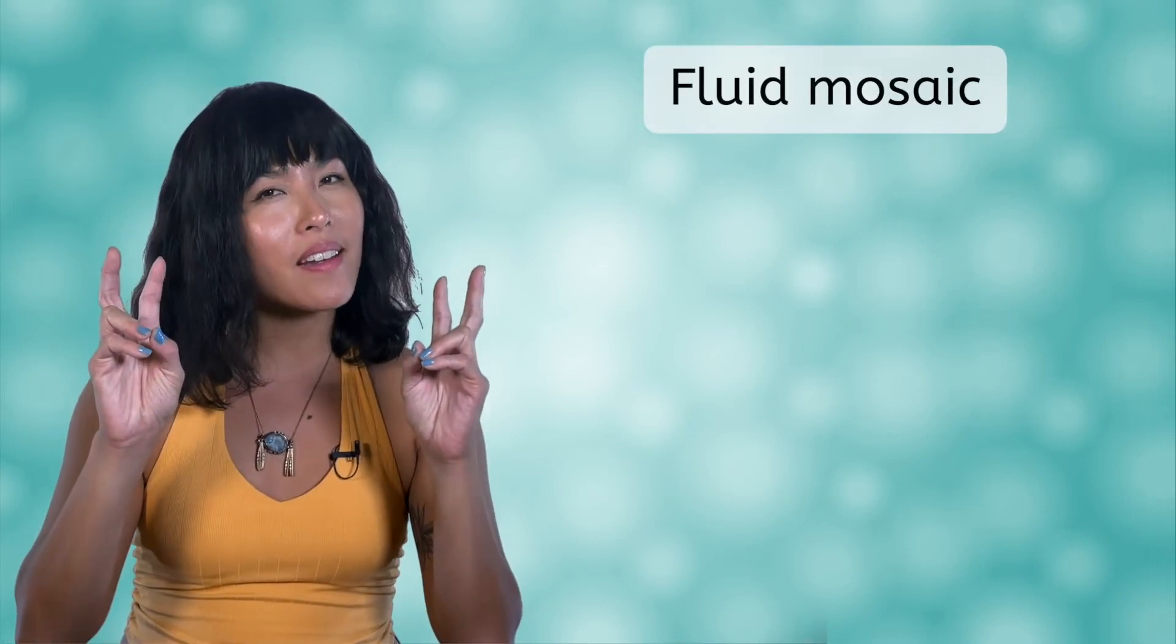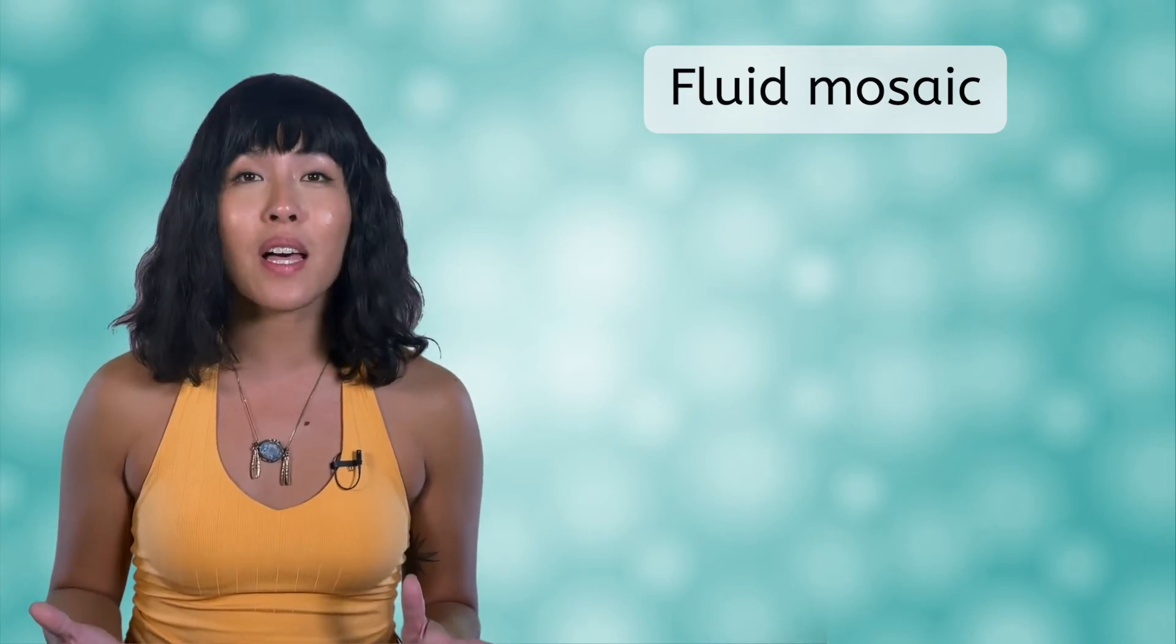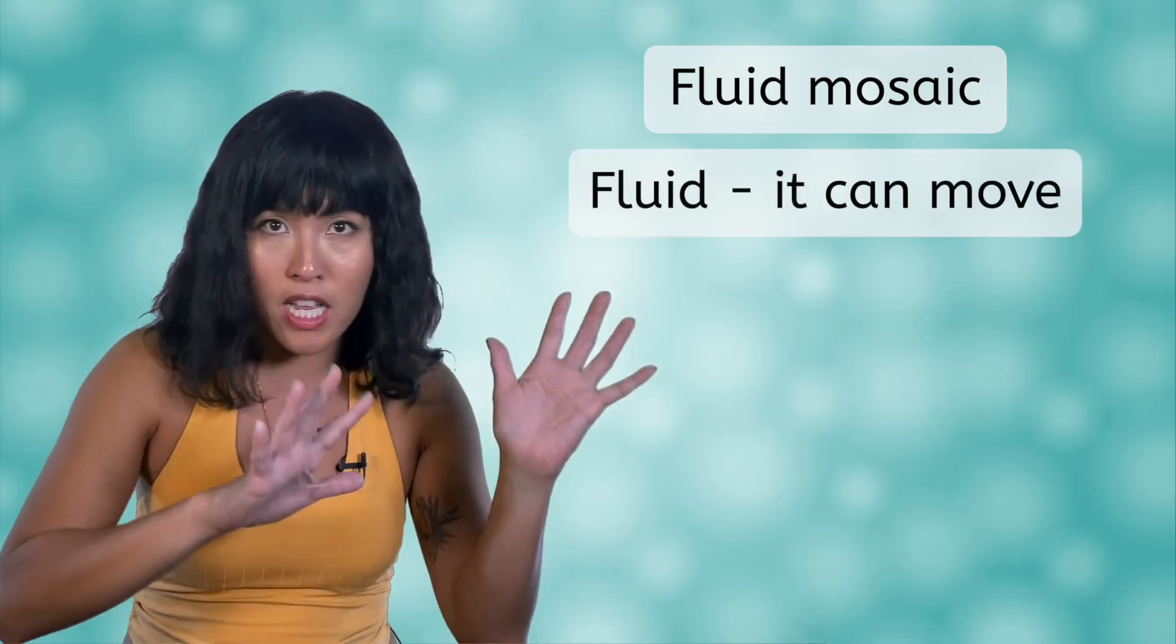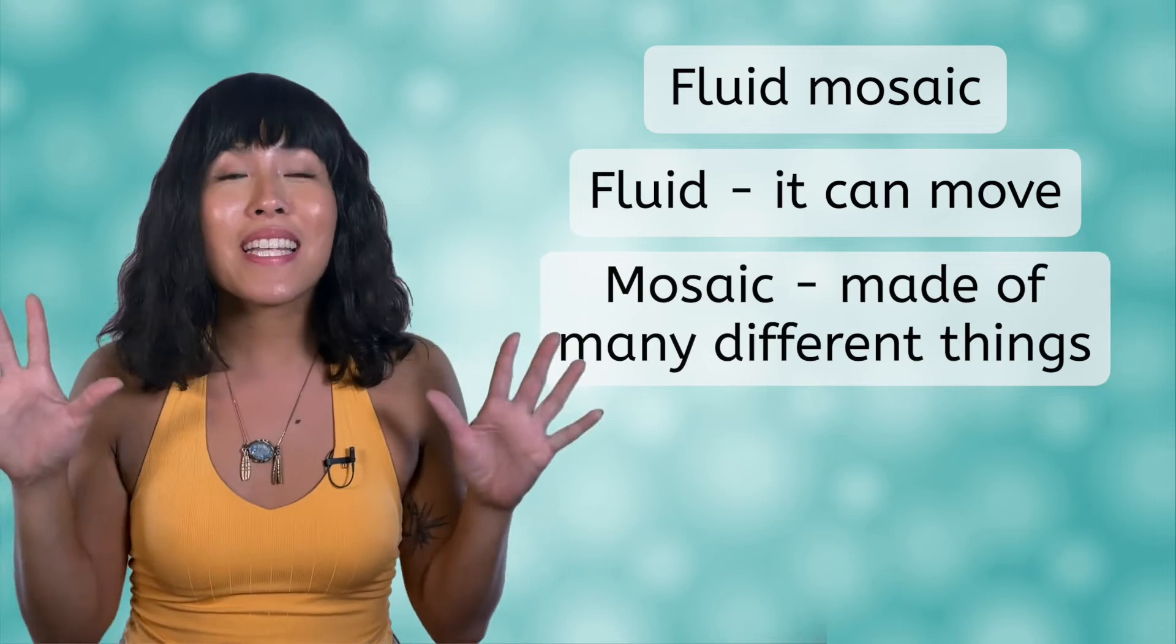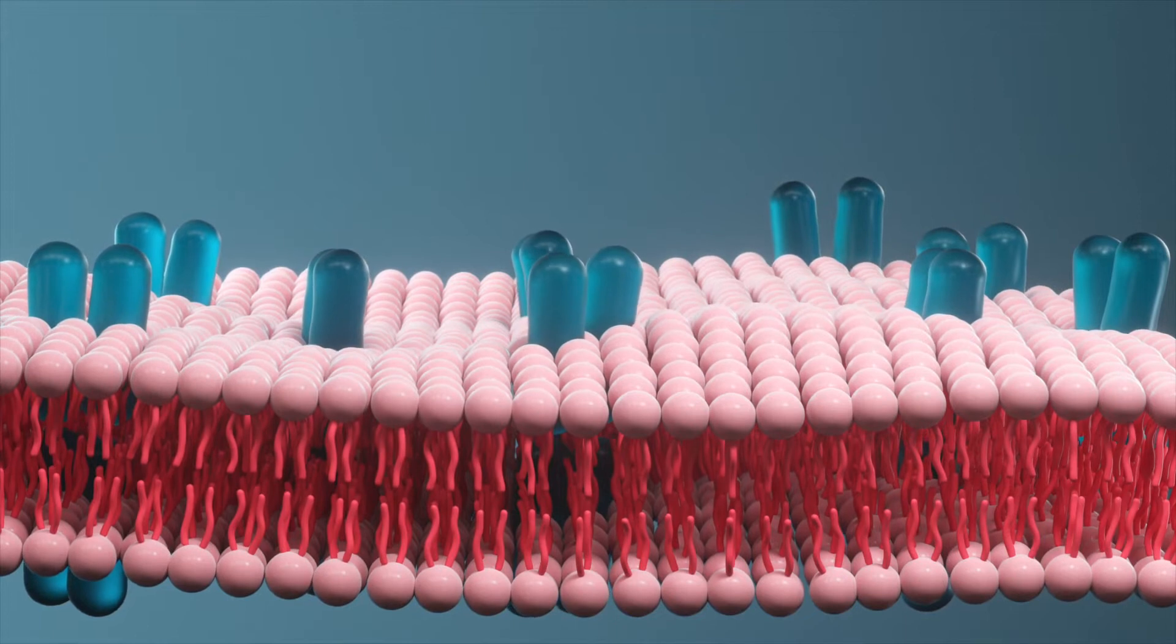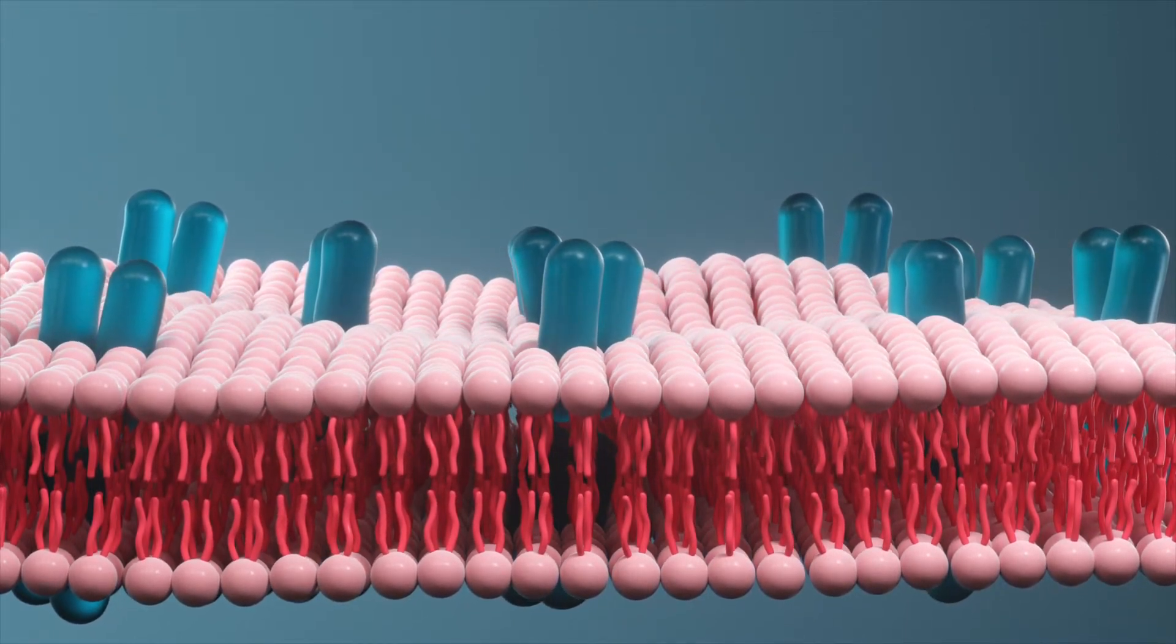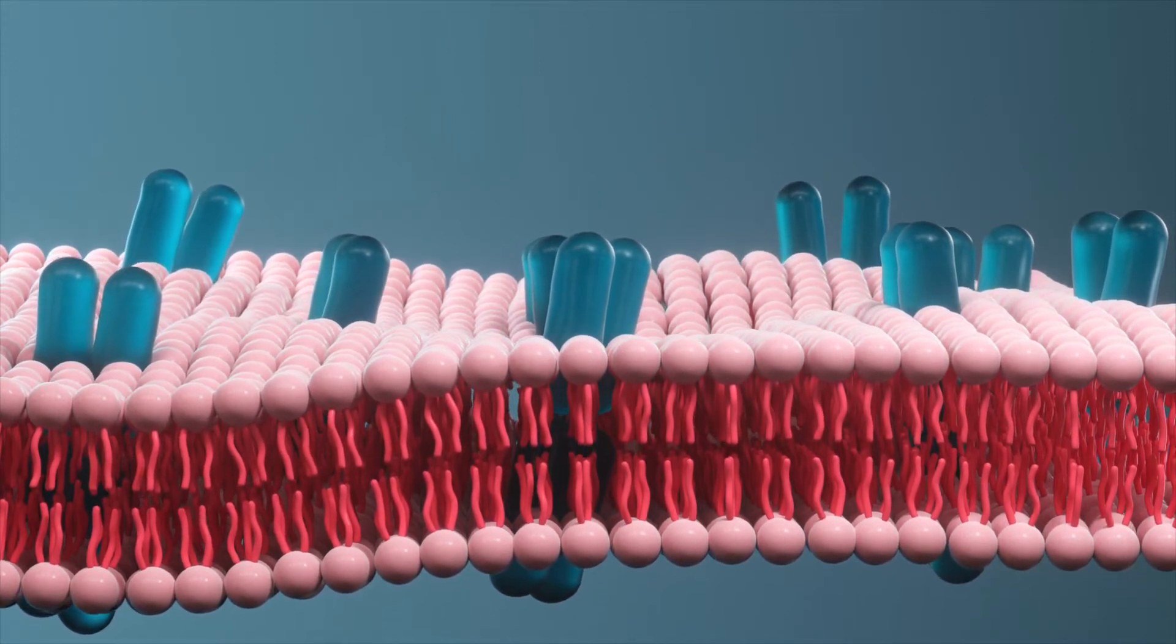Another term often used to describe the cell membrane is fluid mosaic. Again, we can dissect the word to find out that the cell membrane is fluid, meaning it is flexible and can move, and that it is a mosaic, meaning that it is made of many different things. In this animation of the cell membrane, you can see both properties. It moves and has various pieces embedded in it.